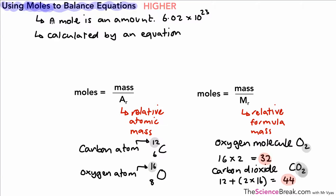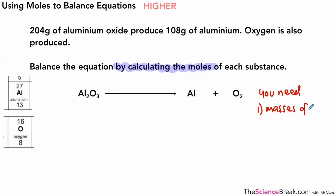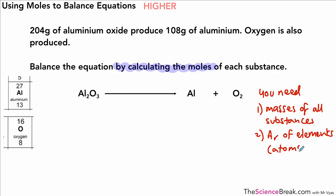We're going to use moles to balance equations. You might think it's easy to balance an equation by inspection — for this one we'd get two aluminium oxides — but the question asks us to balance by calculating moles. To do that, we need: the masses of the substances, the atomic masses of the elements from the periodic table, and the mole equation.